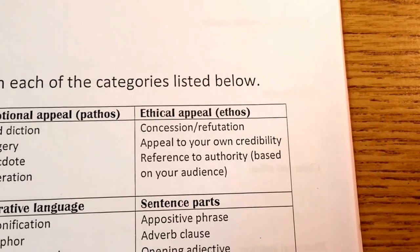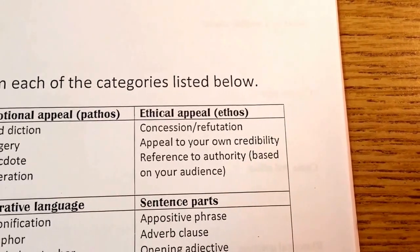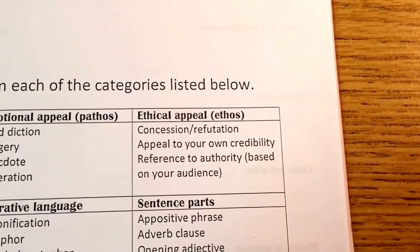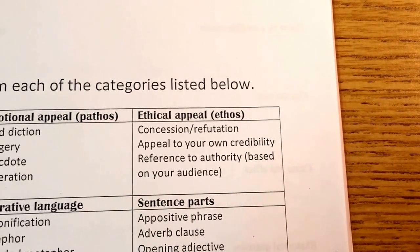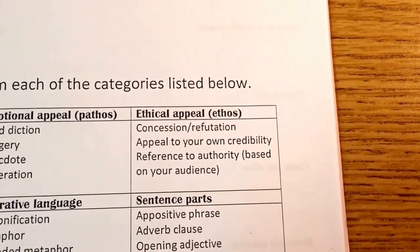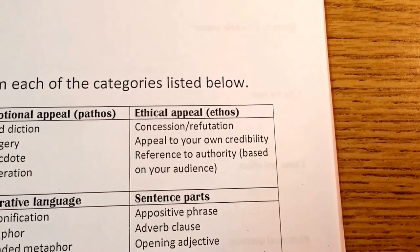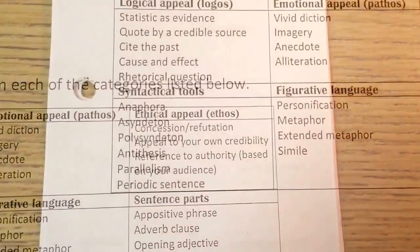Then two from ethical appeal. Concession-refutation will count as one. Or you could do appeal to your own credibility, or reference to authority based on your audience. So if you're writing to teachers, you might want an authority figure example where teachers would find that person to be credible.